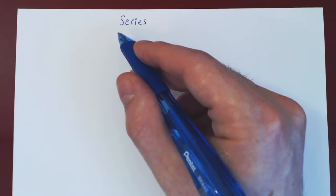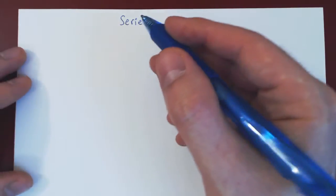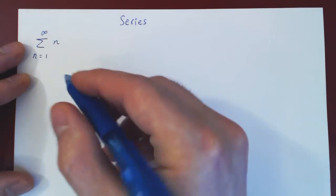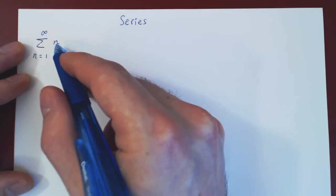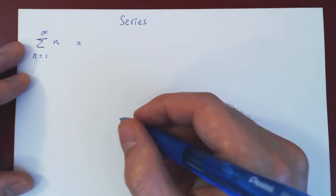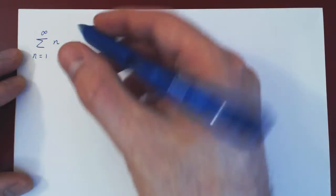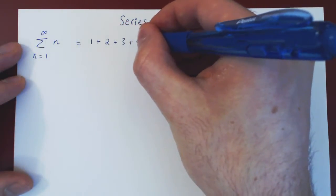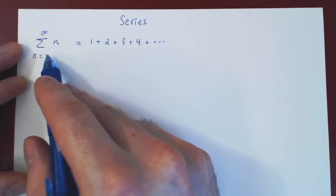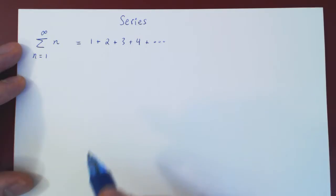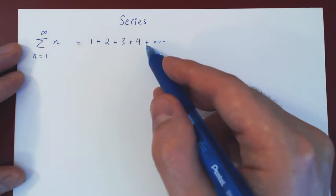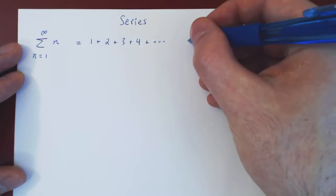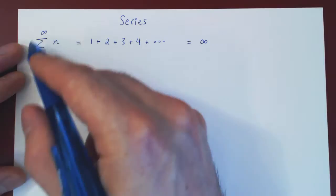Let us first consider three examples, two of which we have already seen in previous videos. Suppose we look at the sum of n as n goes from 1 to infinity. So we're summing an infinite number of real numbers: 1 plus 2 plus 3 and so forth. Here we're trying to add all positive integers, and of course the sum becomes larger and larger. The sum clearly blows up to positive infinity, so this series diverges.